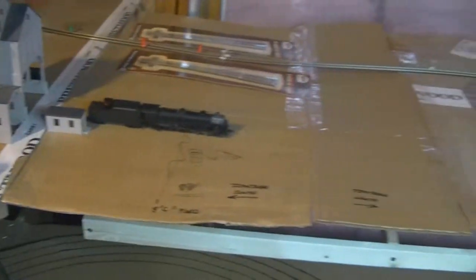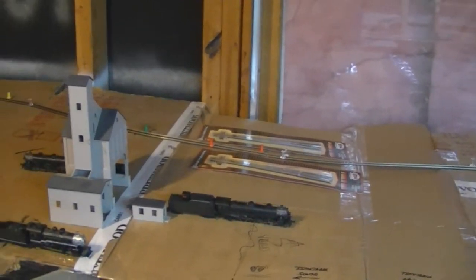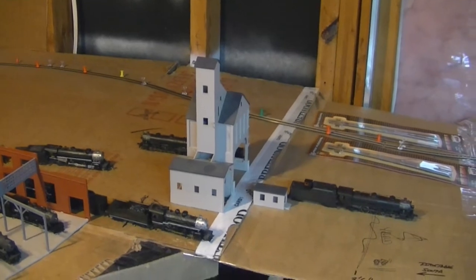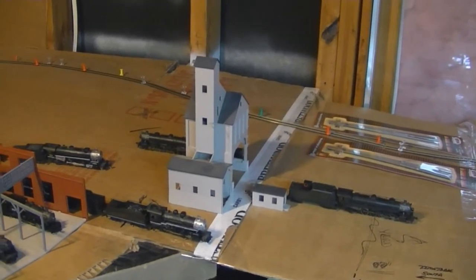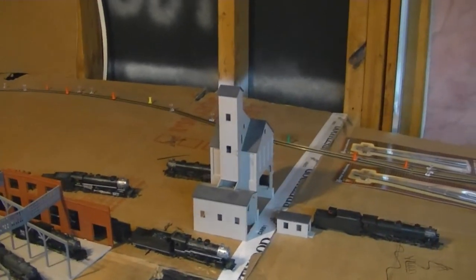Timetable south at this particular location is actually due north. I'm going to have that all over the layout on the fascia so people will know which direction they're going, because in timetable and train order operation you need to know what direction you're going.